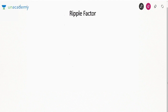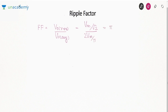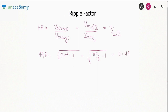Form factor = V0_rms / V0_avg = (Vm/√2) / (2Vm/π) = π/(2√2) — same as center-tapped full wave rectifier. Voltage ripple factor = √(FF² − 1) = √(π²/8 − 1) = 0.48. This is less than 1, meaning harmonics are less than the DC component, so DC dominates the harmonics.